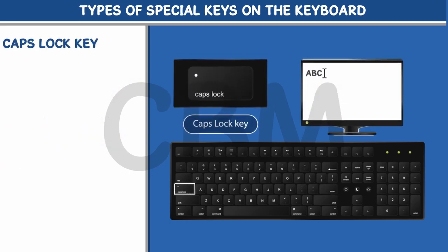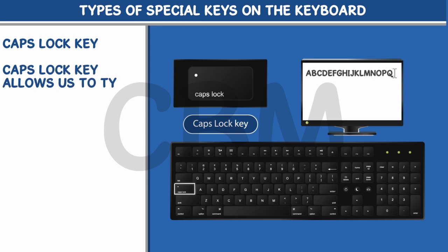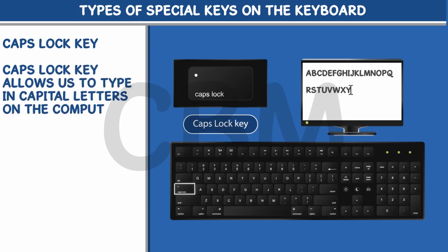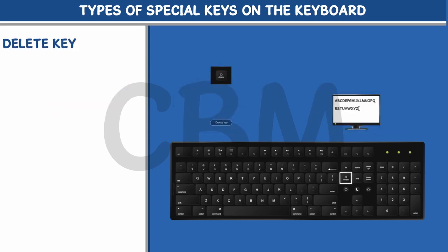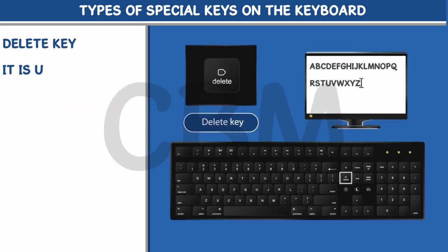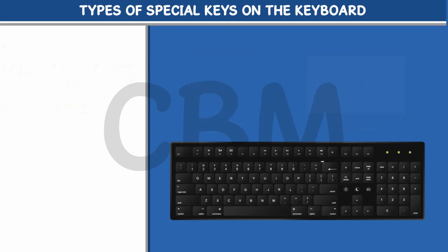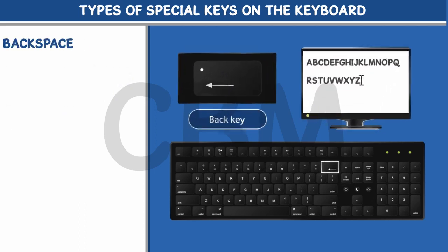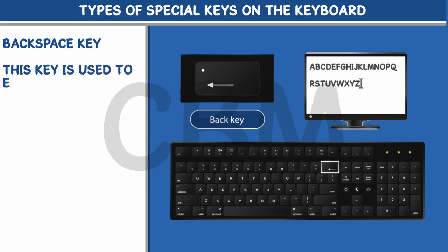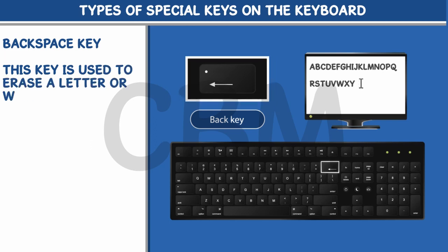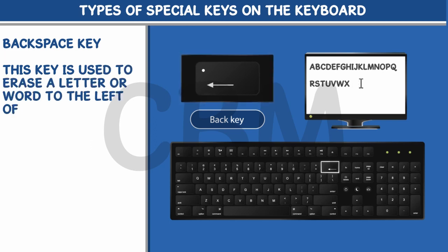Caps Lock Key. Caps Lock Key allows us to type in capital letters on the computer. It is used to erase or delete a letter or word to the right of the cursor. Backspace Key. This key is used to erase a letter or word to the left of the cursor.